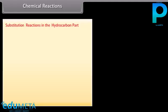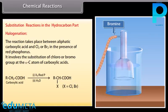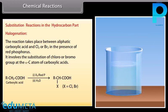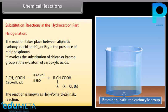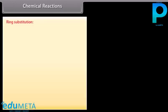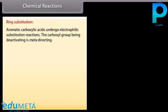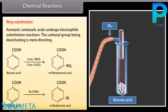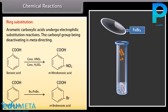Substitution reactions in the hydrocarbon part. Halogenation: the reaction takes place between aliphatic carboxylic acid and chlorine or bromine in the presence of red phosphorus. It involves the substitution of chloro or bromo groups at the alpha carbon atom of carboxylic acids. This reaction is known as the Hell-Volhard-Zelinsky reaction. Ring substitution: aromatic carboxylic acids undergo electrophilic substitution reactions. The carboxyl group, being deactivating and meta-directing, causes benzoic acid to be converted into meta-nitrobenzoic acid with concentrated nitric and sulfuric acid, and into meta-bromobenzoic acid with bromine and ferric bromide.